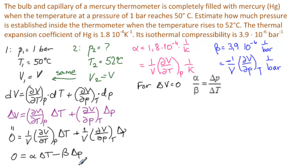And what we get is 0 equals alpha dT minus beta dP. And if we solve this, we will get exactly this. So that's where this formula comes from.